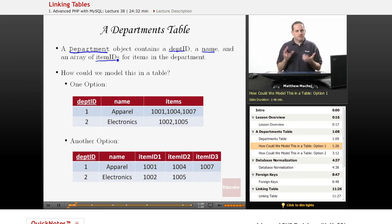So how could we model this in a table? There's a couple of different things that we could do. For example, we could create a table that maps one column to each property of our object. We could have a column called department ID, which would be the primary key of the table. It's a unique ID for each department. We could have a column called name, which would be the name of the particular department. And then we could have a column called items, which would be used to hold the information about all of the different items that are in a particular department.